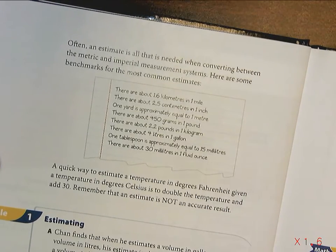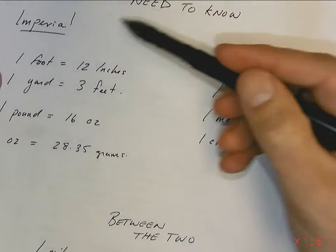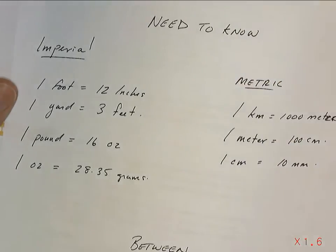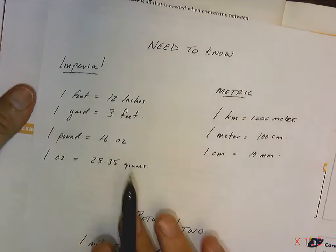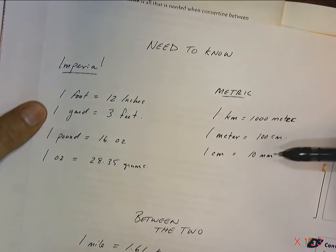I made a little list of the things that I think that we probably should know. Imperial: you really should know that a foot is equal to 12 inches and I'm gonna test you on that.